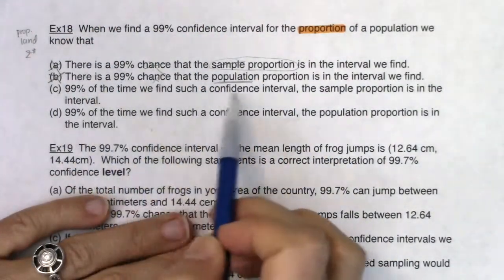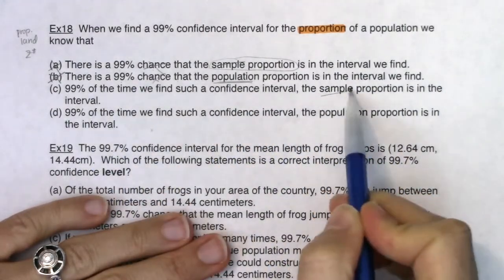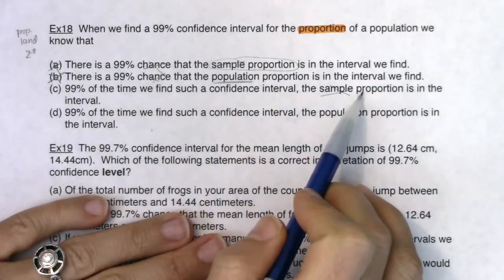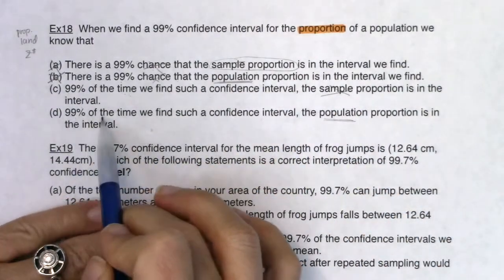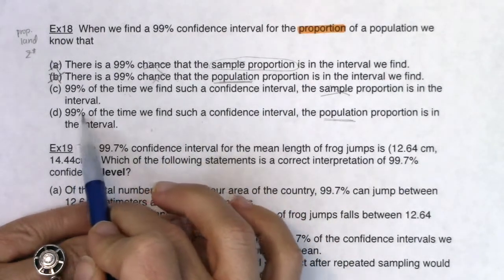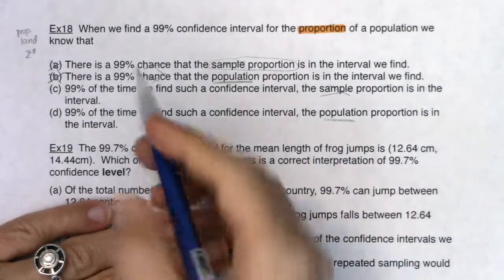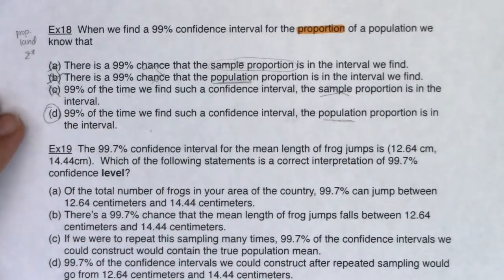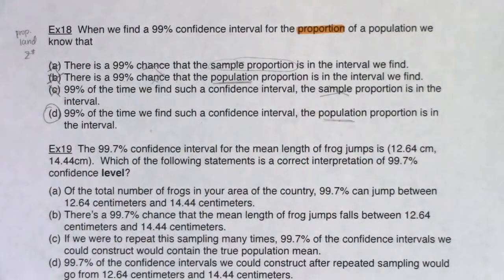Option C says 99% of the time we find such a confidence interval, the sample proportion is in the interval. The structure '99% of the time we do this' is great, but it's still the sample proportion — that's wrong. Option D says 99% of the time we construct intervals based on this method, the parameter is in the interval. That's our answer. This refers to repeated samples: if we did this time and time again, 99% of our intervals contain the parameter — that's an interpretation of the confidence level.